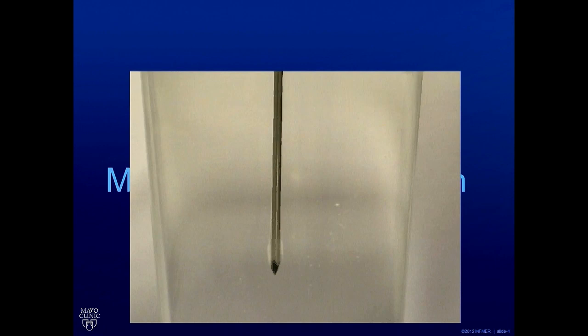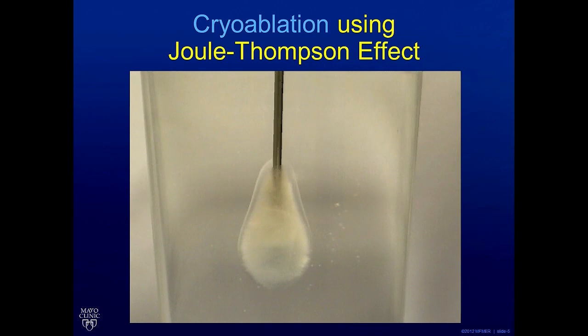MR Guided Cryoablation depends upon the Joule-Thompson effect, where argon gas run through a small needle produces an intense cold and ice forms. This ice can be visualized with MRI to a very precise extent.